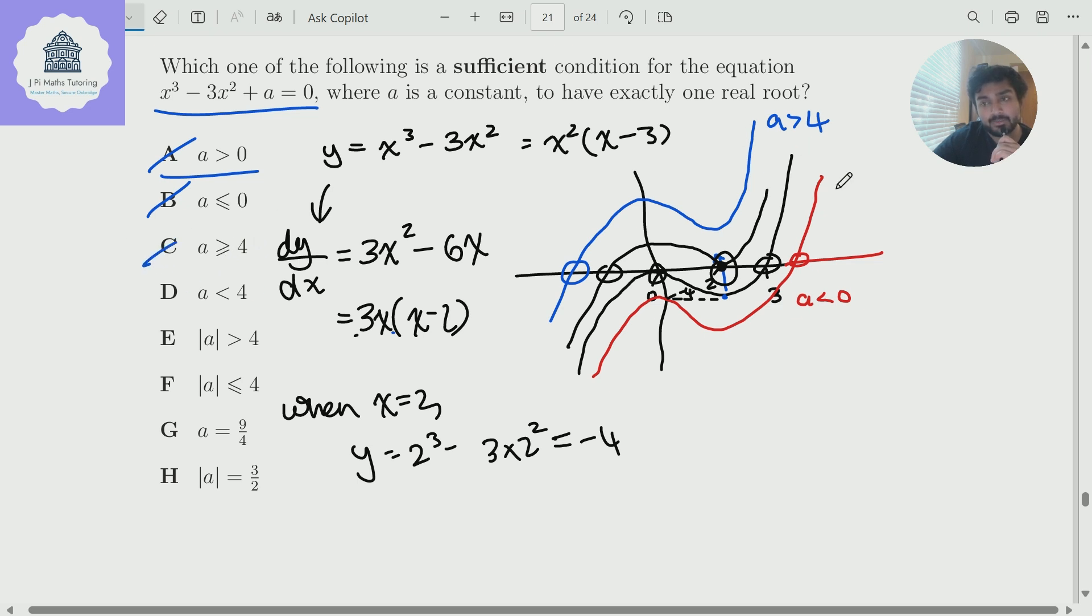It's not D, because a would be allowed to be three there. Could potentially be E. It can't be F, because a would also be allowed to be four. It can't be G, because nine over four doesn't satisfy either of these inequalities. And similarly, it can't be H. And so therefore, the answer must be E.